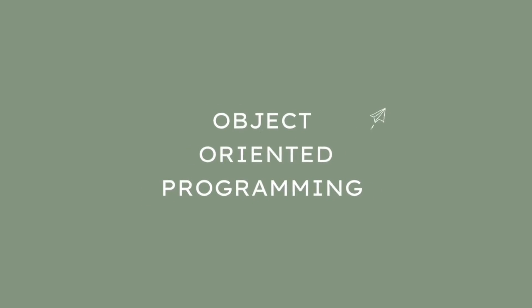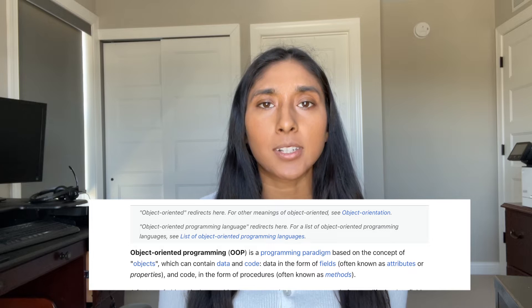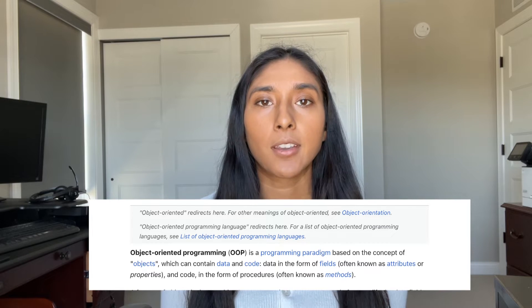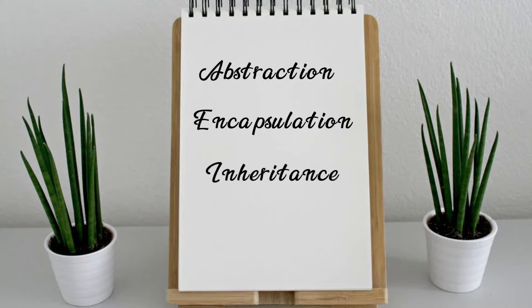First up is object-oriented programming. Object-oriented programming is a computer programming model that organizes software design around objects rather than functions. It's helpful in the sense that you're easily able to reuse and recycle code in the form of instantiating objects without redoing much of the existing logic. Some of OOP's main features include abstraction, encapsulation, inheritance, and polymorphism. These are the essentials for understanding many back-end languages.